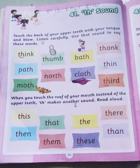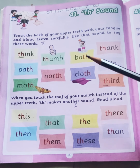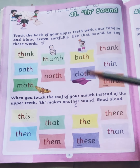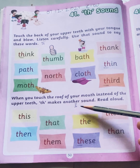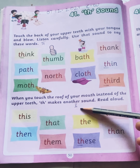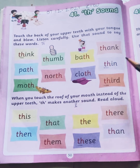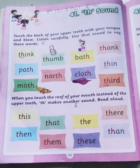So children, there are two types of sounds which are created by TH. One is the soft sound, that is TH. Another one is the hard sound, that is TH. You have to practice reading at your home. Bye-bye.